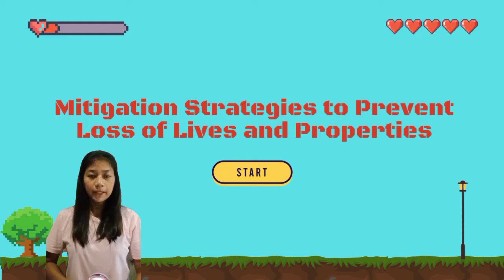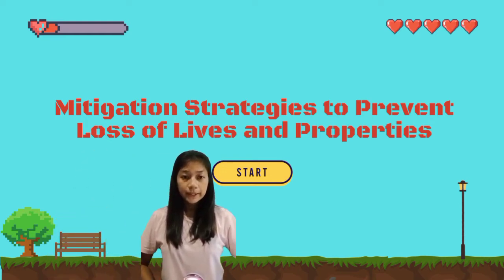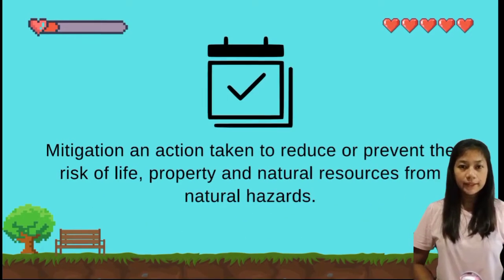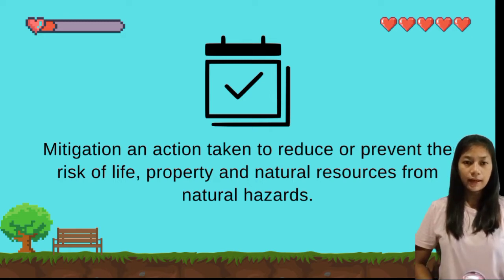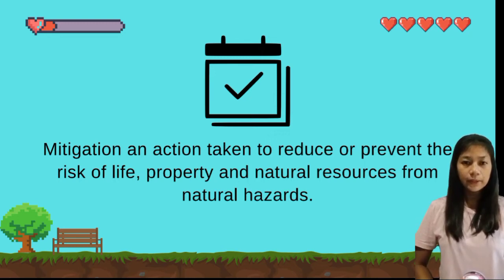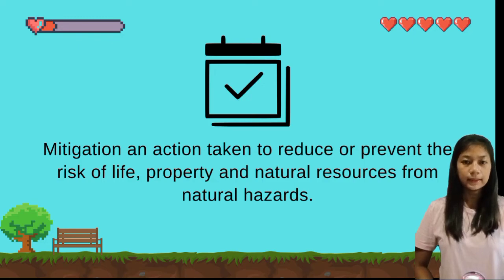First, we must define the word mitigation. Mitigation is an action taken by someone or a group of people to reduce or prevent the risk to life, property, and natural resources from natural hazards — also known as geological hazards. There is no way to avoid natural hazards, but people and organizations may take steps to minimize the loss of lives and properties through practicing mitigation strategies.